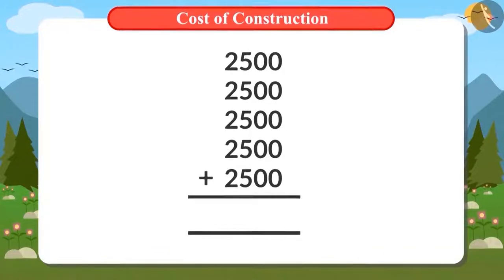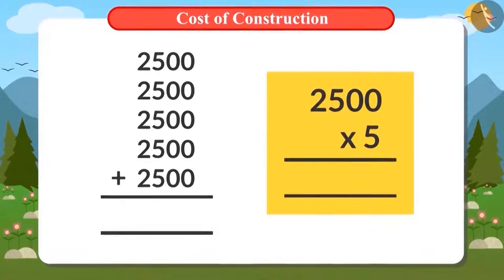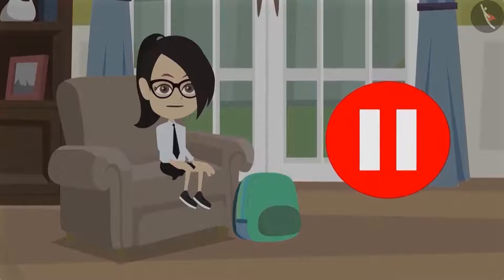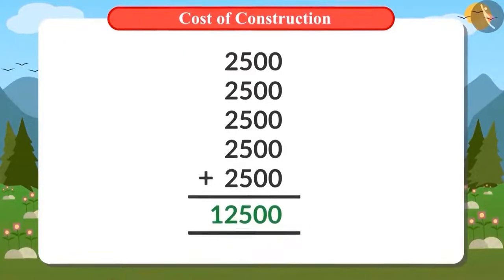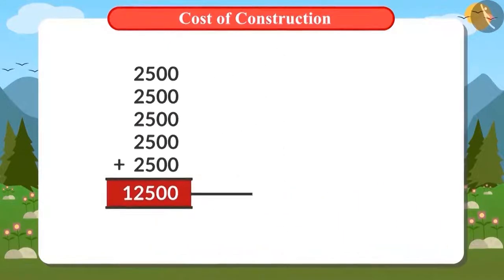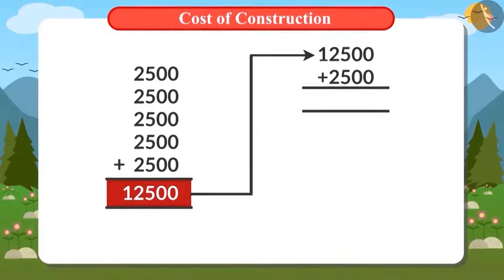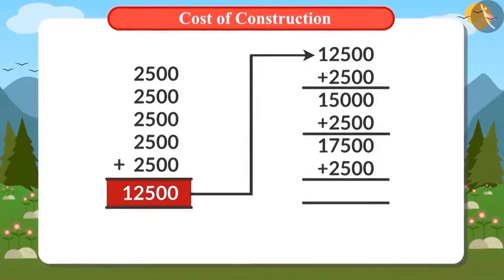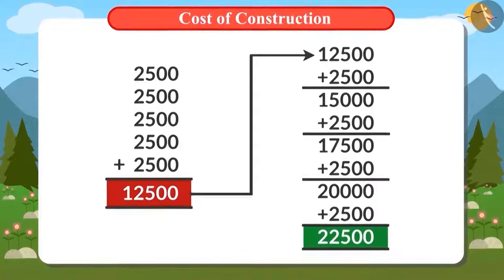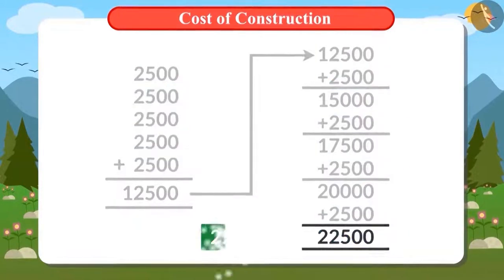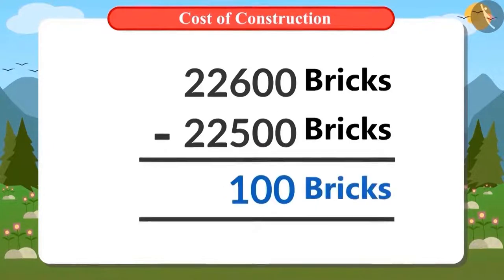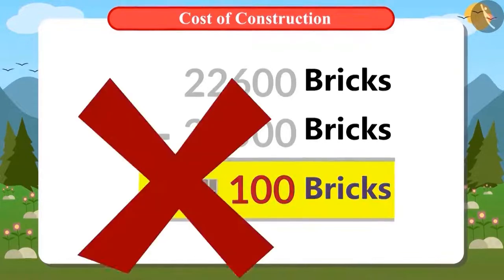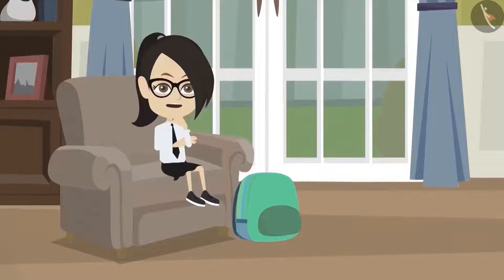Adding 2,500 five times, we can also multiply 2,500 by 5. You can find the answer by pausing this video. The answer is 12,500, which is smaller than 22,600. So we add 2,500 again. After the 6th addition the total is 15,000; after the 7th it is 17,500; after the 8th it is 20,000; and after the 9th it is 22,500. Even after ordering 9 trucks, we only have 22,500 bricks — we are still short of 100 bricks. The whole truck will not be called for just 100 bricks, so how will we buy the remaining 100?